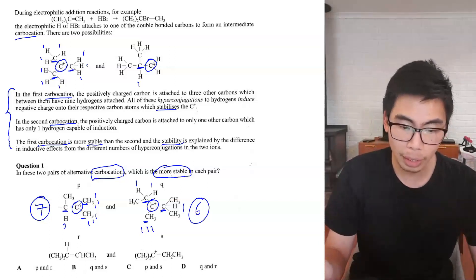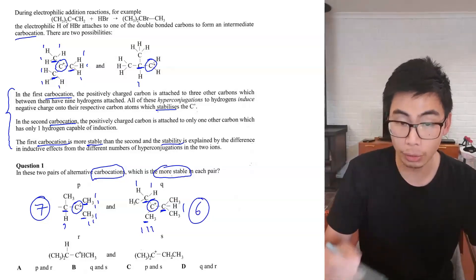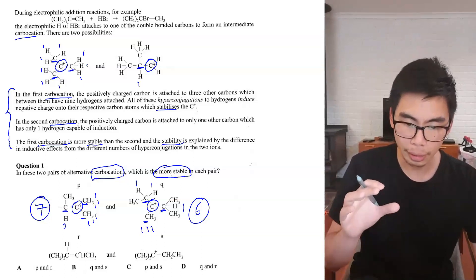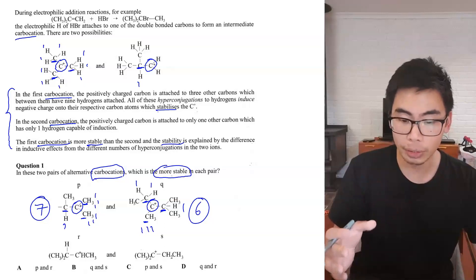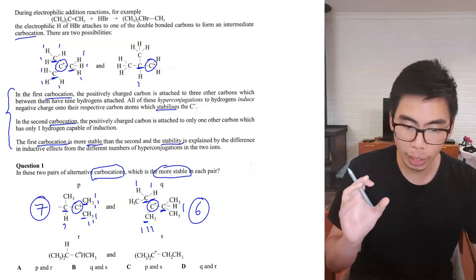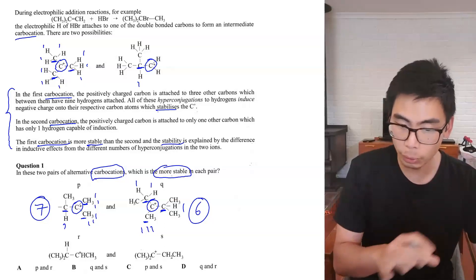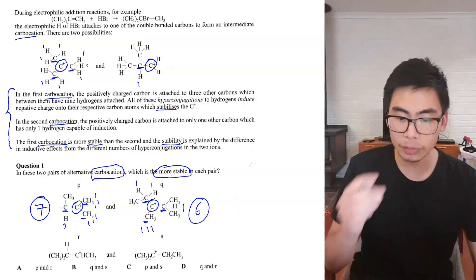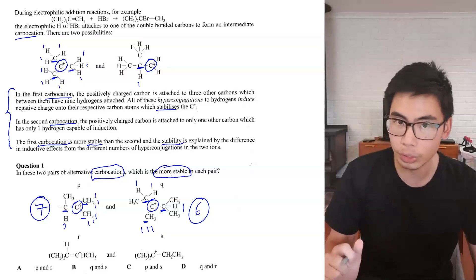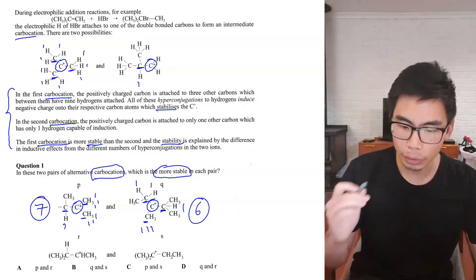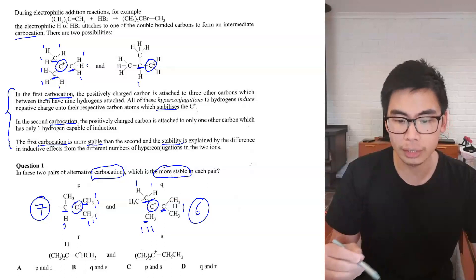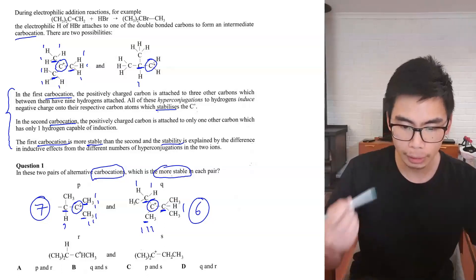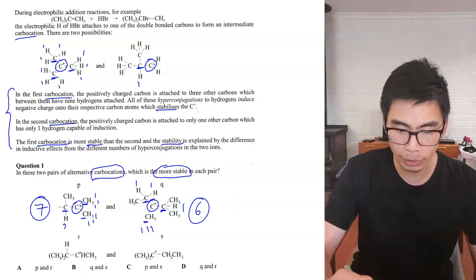The more stable carbocation is P, because it has seven hyperconjugations rather than six. It's pretty close, and if you tried to eyeball it without annotations it would be very difficult to determine which is more stable. It's always important to visualize things and work in a systematic way.